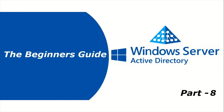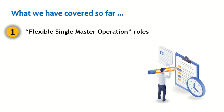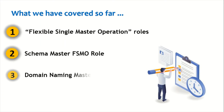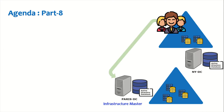Hello everyone, hope you're doing well. Welcome to part 8 of the beginner's guide for Windows Server Active Directory. So far we have covered the flexible single master operation roles — the schema master role, the domain naming master role, and the RID master role. In today's session, we are going to take a look at the infrastructure master role.